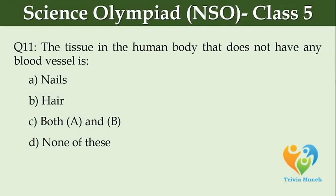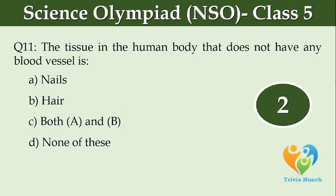The tissue in the human body that does not have any blood vessel is dash. Option A, nails. Option B, hair. Option C, both A and B. Option D, none of these.